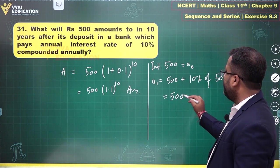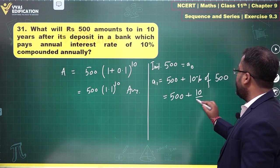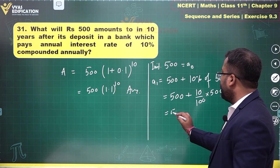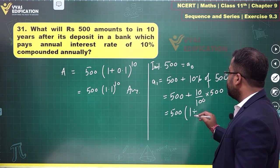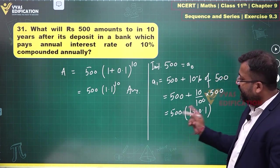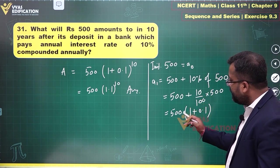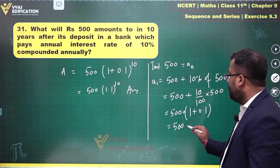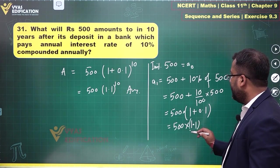So 500 plus 10% is 10 by 100 of 500. If I take out 500 common, what do I get? 1 plus 10 by 100, which is 0.1. This is what you get at the end of the year. Basically, you multiply 500 by 1.1 at the end of one year.